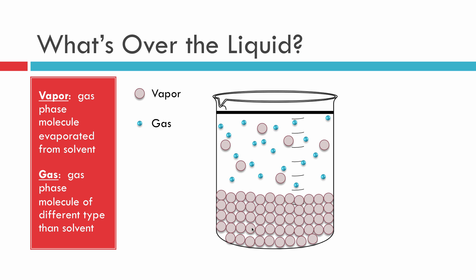We're going to imagine the vapor not being there — it just simplifies the picture. The process we're looking at is how some of these gas particles find their way into the liquid and get dissolved. Now this is a mixture, so we call it a solution. Just before, we had a pure liquid and a pure gas. Now we've got a mixture of the liquid and the gas down here — that's a solution.